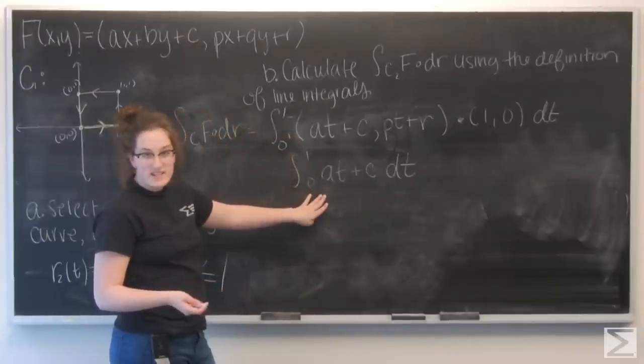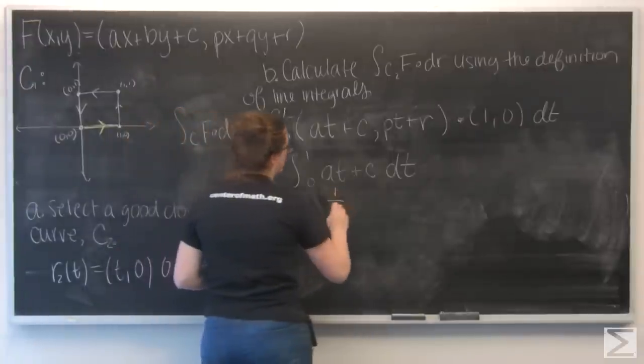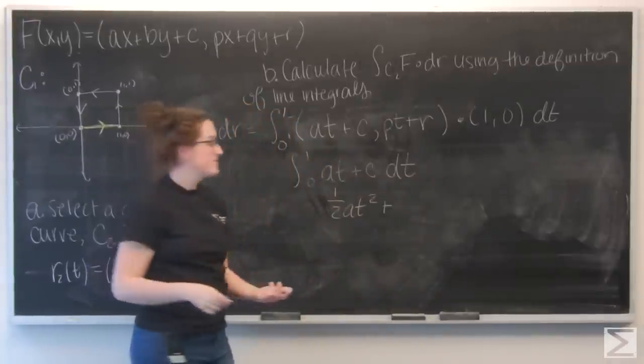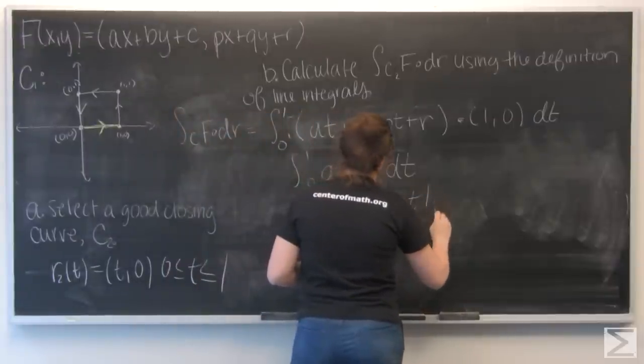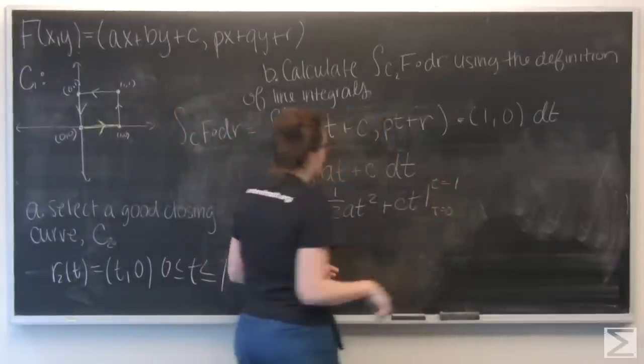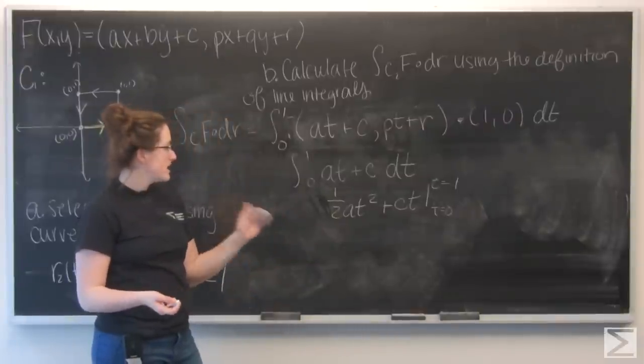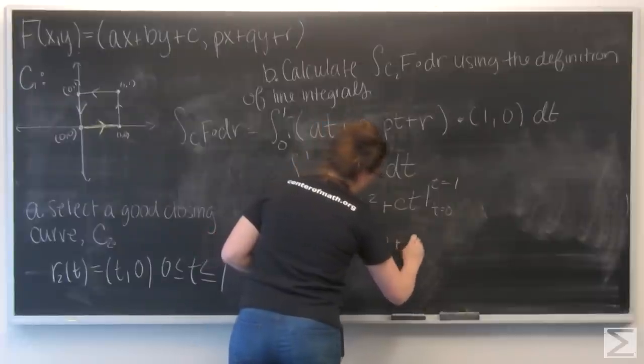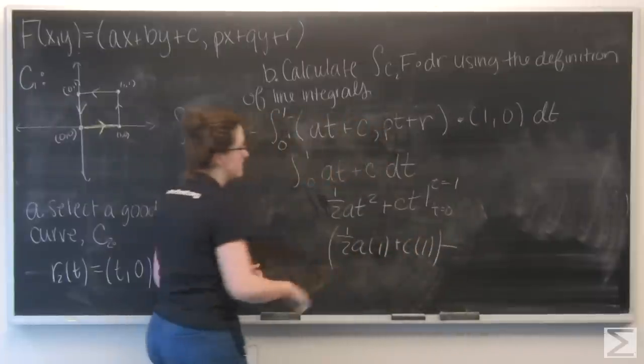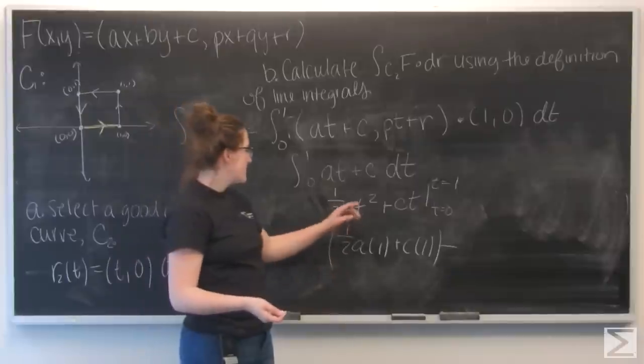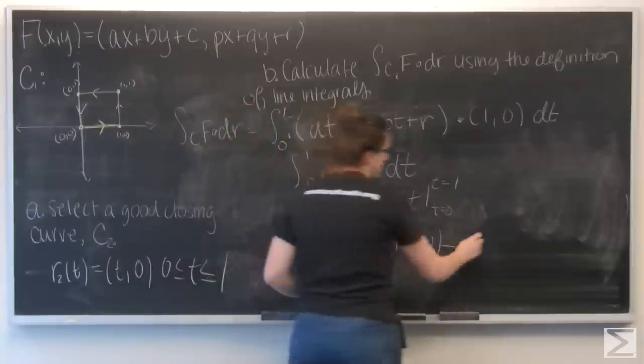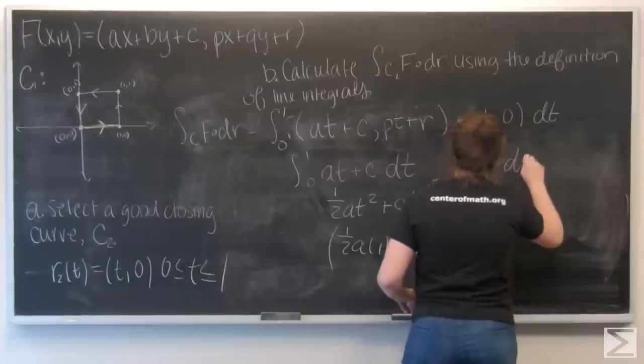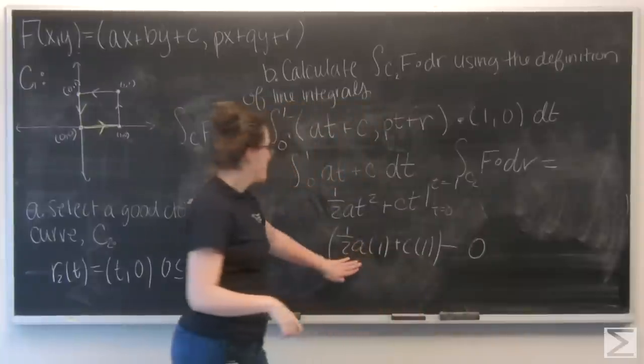When I integrate at, I'm going to get (1/2)at squared. And then c is like a constant, so when I integrate I'm going to get ct. Let's evaluate this from t equals 0 to t equals 1. So plug in a 1 everywhere I see a t, and then plug in a 0 everywhere I see a t, which isn't going to give me much because both of my terms are going to be 0. So I get that my line integral equals (1/2)a plus c.